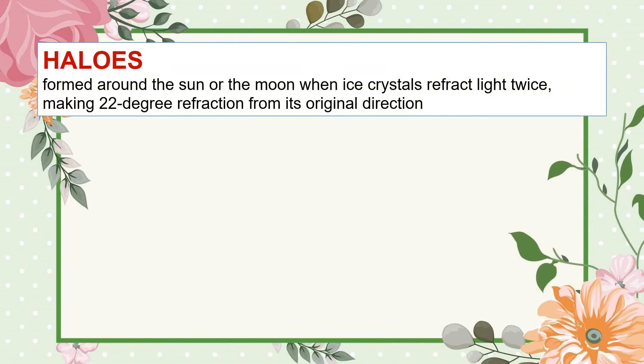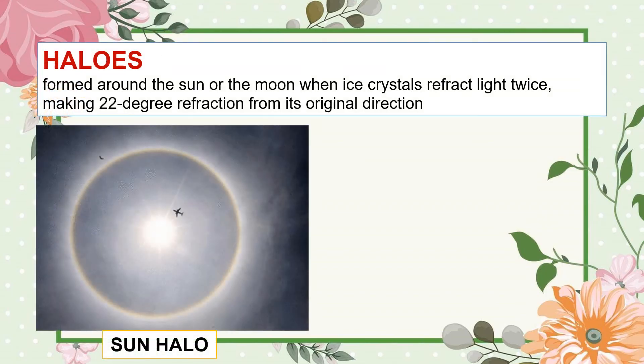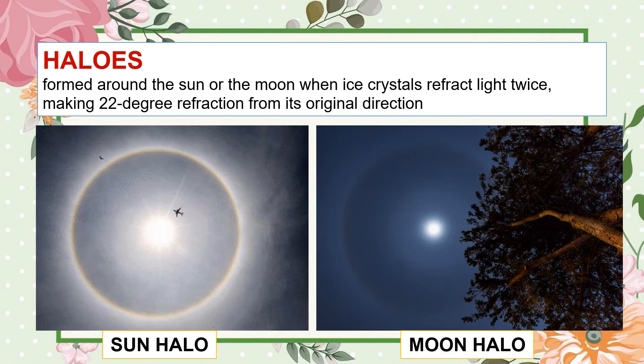Halos and sun dogs are optical phenomena that happen when light is reflected or refracted by ice crystals in the atmosphere. Halos are formed around the sun or the moon when ice crystals refract light twice, making a 22-degree refraction from its original direction. The refraction occurs in hexagonal ice crystals mostly found in cirrus clouds.